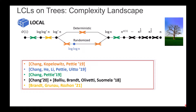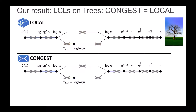What is known about LCL problems in the LOCAL model on trees? We actually have a full picture of the complexity landscape. On this picture you can see the different complexities — whenever there is a problem with a given complexity, you see a dot; for example, there is a problem with complexity log n. In areas marked with an x, no single problem has that complexity, giving us lots of gaps in the complexity landscape. What we show in this paper is that we have exactly the same picture in the CONGEST model — exactly the same dots and exactly the same gaps.